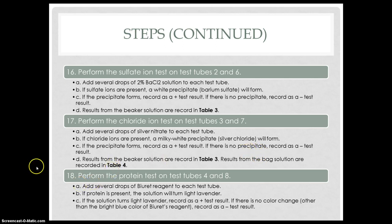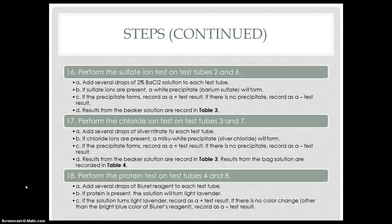We performed the protein test on test tubes 4 and 8. We added several drops of Biuret reagent into each test tube. If protein was present, the solution would turn light lavender, recorded as a positive test result. If there was no color change other than the bright blue color of Biuret reagent, we recorded it as a negative test result.